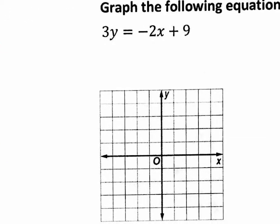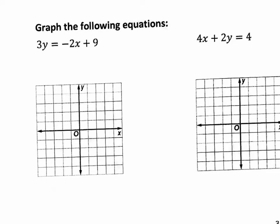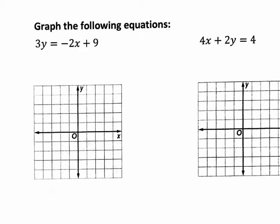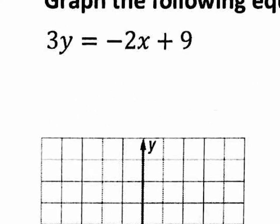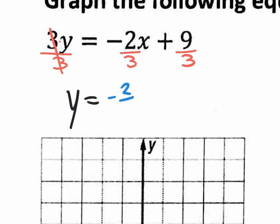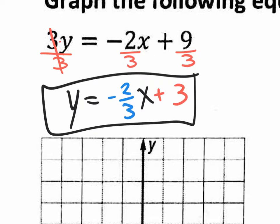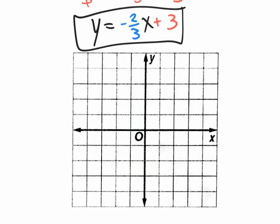These next two, they want us to graph the following equations. The easiest way is to get into y equals mx plus b form. This one is not in y equals mx plus b form — you need to get y by itself. Divide everything by 3. My new slope-intercept form equation is y equals negative two-thirds x plus 3. Nine divided by three is three. Now that we have it in slope-intercept form, the b value is 3, crosses at 3 right here. Go down 2 over 3, put a dot, connect the dots, and we're done.